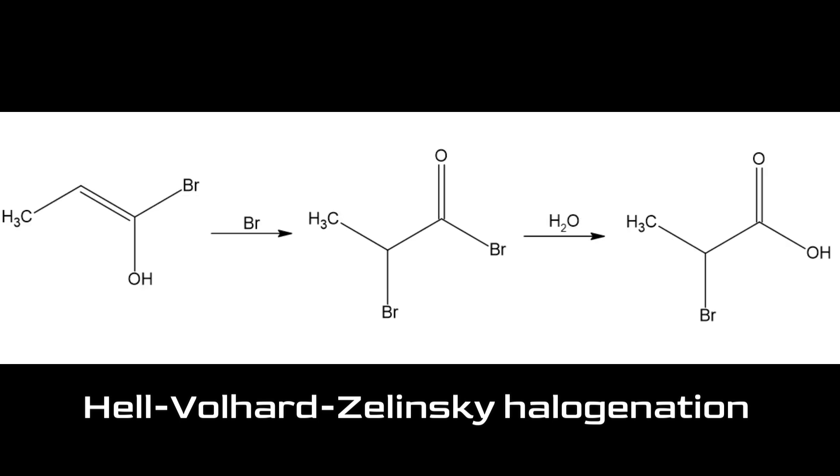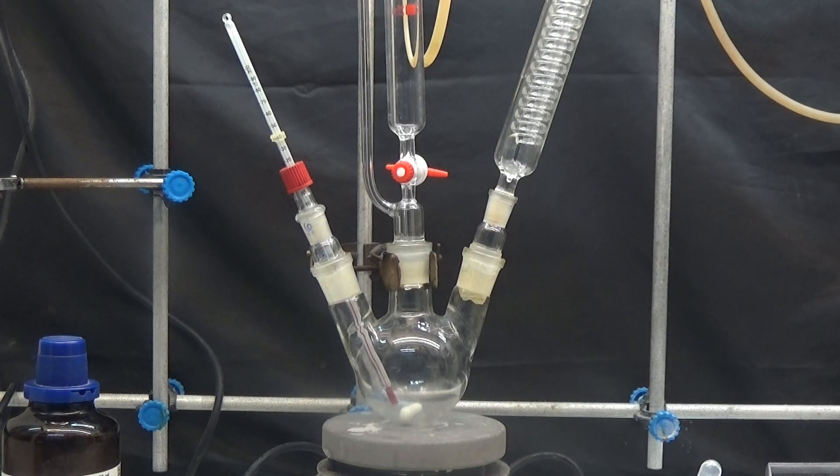The formation of an enol results in a reaction with another bromine atom in the alpha position. 2-bromopropyl bromide undergoes hydrolysis when heated with water to form 2-bromopropionic acid. The initial step we will take is to obtain 2-bromopropionyl bromide.